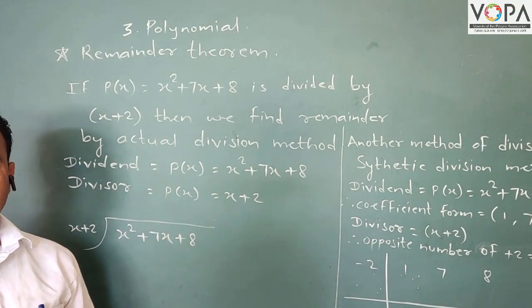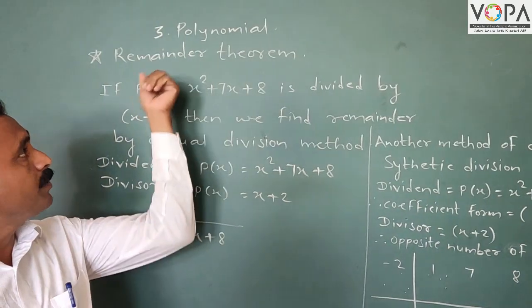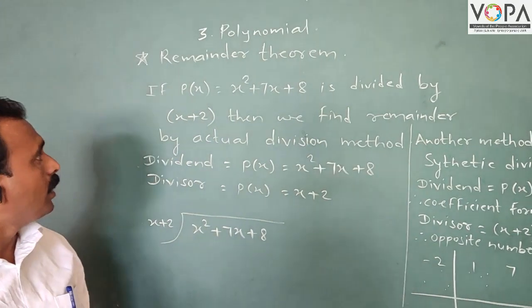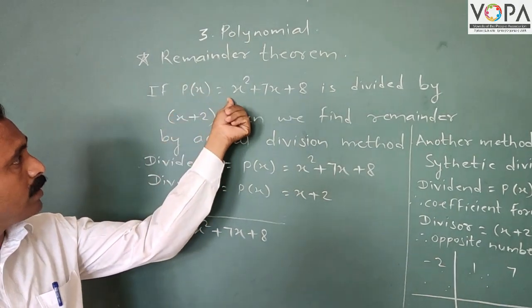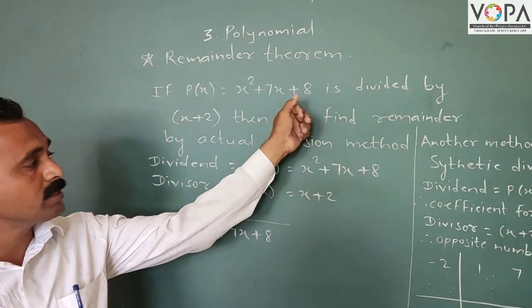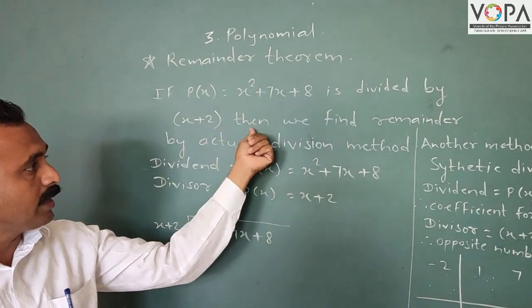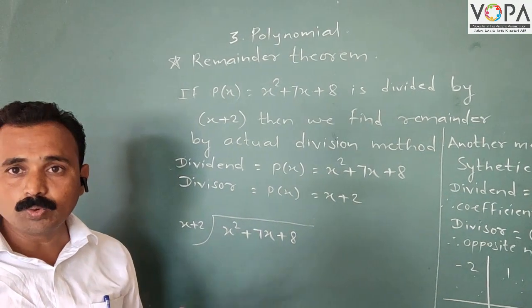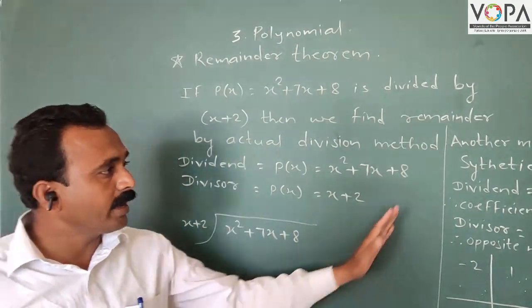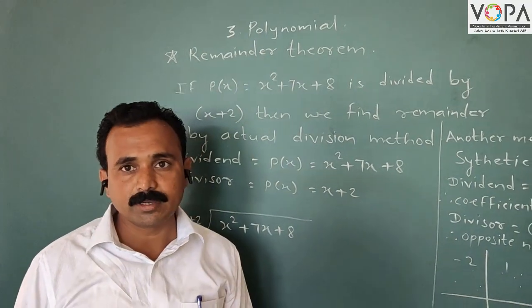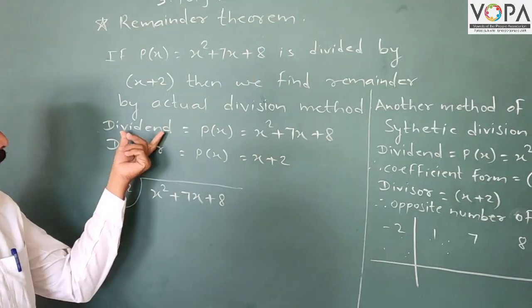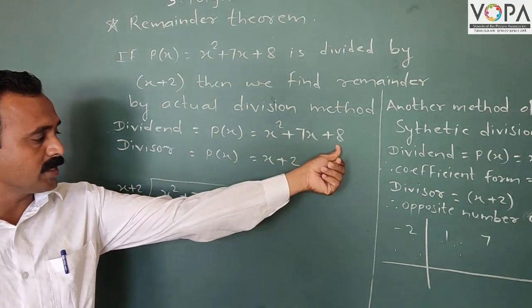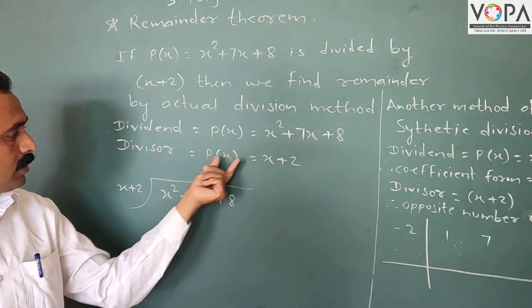Dear students, today we are taking the division method. First, the Remainder Theorem: if p(x) = x² + 7x + 8 is divided by x + 2, then we find the remainder by the actual division method. There are two methods of division: the actual division method and the synthetic division method. The dividend is x² + 7x + 8 and the divisor is x + 2.